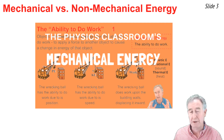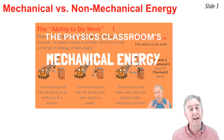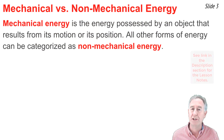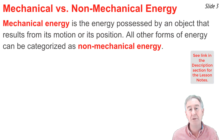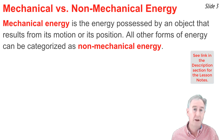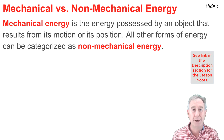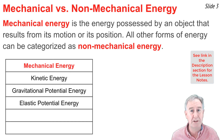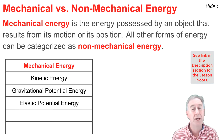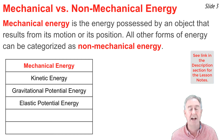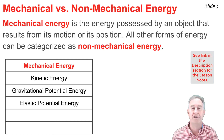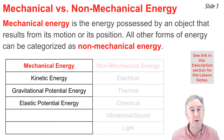In a previous video, I discussed mechanical energy — I left a link to that video in the description section. In that video, we mentioned that mechanical energy is the energy possessed by an object as a result of either its motion, its position, or both. All other forms of energy are referred to as non-mechanical energy. The three forms of mechanical energy are kinetic energy, gravitational potential energy, and elastic potential energy. All other forms of energy are non-mechanical forms of energy.